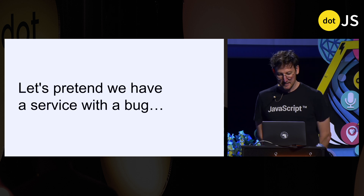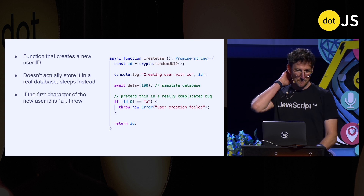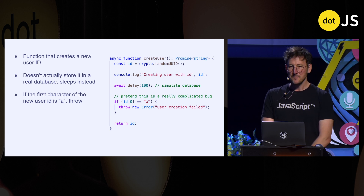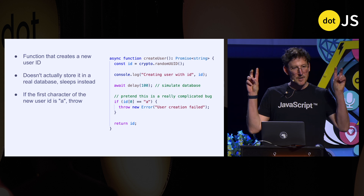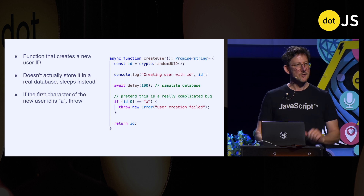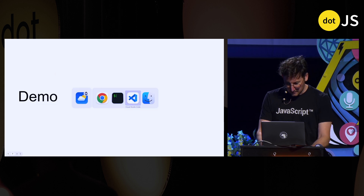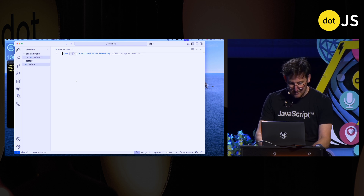So to demonstrate this, let's pretend we have a service with a bug and develop this on the fly. This will be a little bit contrived but bear with me. Let's imagine we have a function called create_user — it's going to create a new user ID, write it to the database (we'll just sleep a few milliseconds), and then we're going to insert a little bug into this and try to understand where that bug is. Let me open up my editor here.